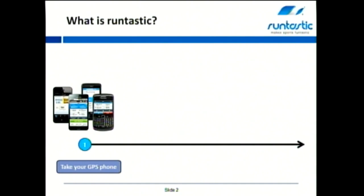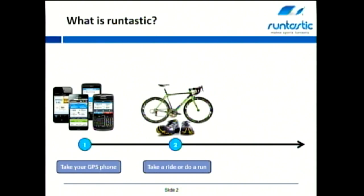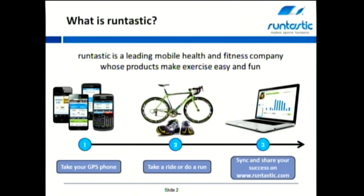How does this work? You take your GPS-enabled smartphone, go out for a run or for a road bike activity, and you start the application. The application then automatically tracks the route you do, it tracks the distance you cover, it takes the elevation gain, and it also tracks your calories. If you have completed your activity, you can then upload the activity and share it with your friends, either on the Runtastic platform and also on Facebook and Twitter.